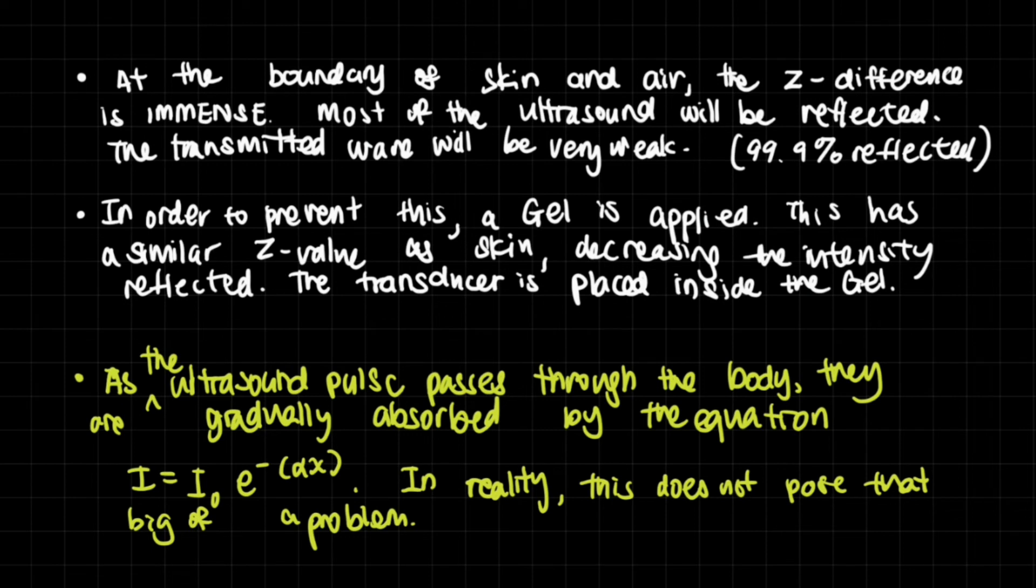If you have a weak wave going in, the wave that comes out will also be very weak, making it harder to detect and form a clear image. To prevent this, a gel is applied. This has a similar Z value as skin.